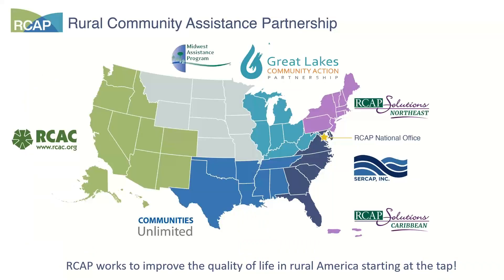So what is RCAP? The Rural Community Assistance Program or partnership is a group of nonprofits that form a national RCAP network that serves all 50 states as well as Puerto Rico. Ohio is part of the Great Lakes region, which also includes the states of Michigan, Wisconsin, Illinois, Indiana, Kentucky, and West Virginia. Most of our staff are home-based. I'm located in Millersburg, Ohio, in Holmes County, and we're all scattered around the state, which makes it pretty easy for us to reach communities all over the place.